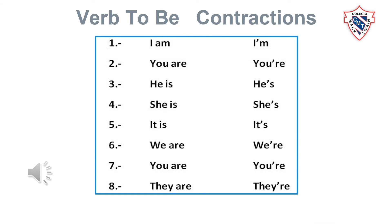Now you are going to learn the contractions. The contractions are: I am — I'm, you are — you're, he is — he's, she is — she's, it is — it's, we are — we're, you are — you're, they are — they're.